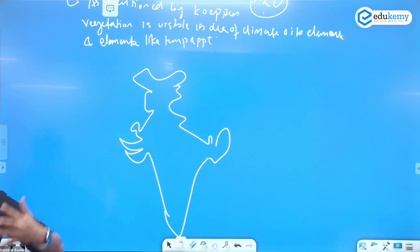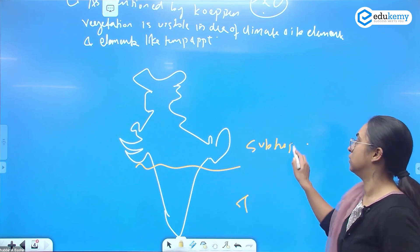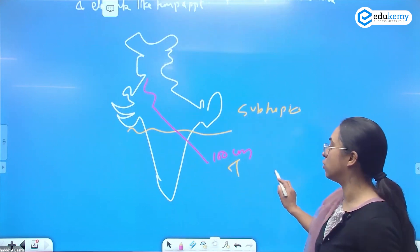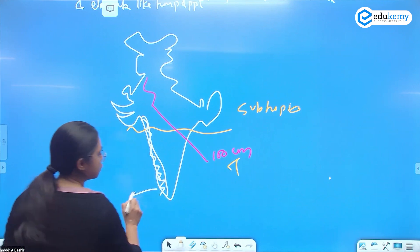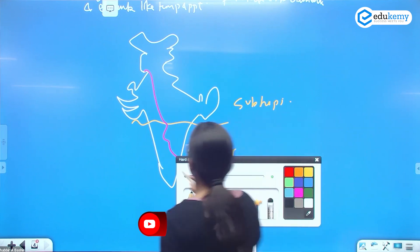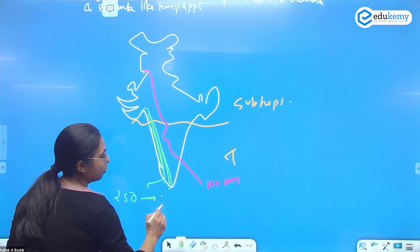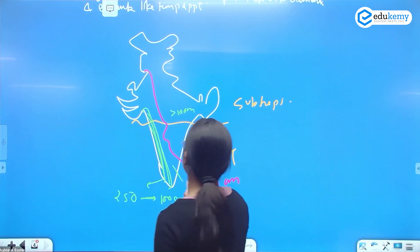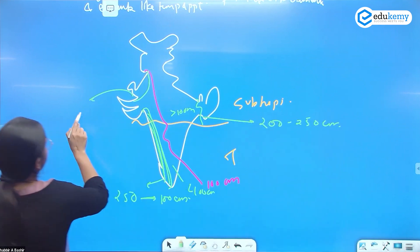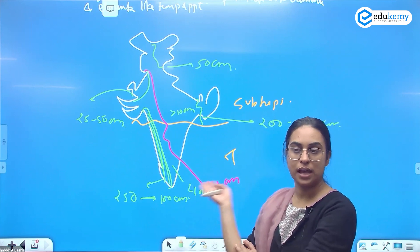India can be divided into tropics and subtropics. You can also show the 100 centimeter ISO height line on the map, and also mark variations: the Western Ghats with around 200 centimeters, the interior with greater than 100 cm on one side and less than 100 cm on the other. The northeastern region gets around 200 to 250 centimeters, while some areas have 25 to 50 centimeters, and even the Ladakh region gets around 50 centimeters.